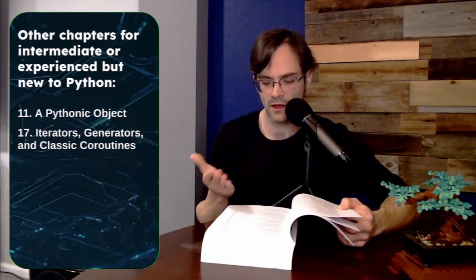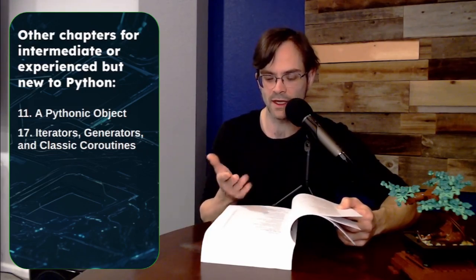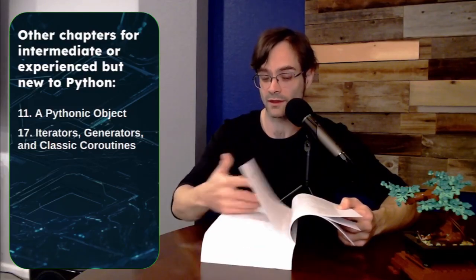And furthermore, I think everyone who's intermediate in Python or coming to Python from another language should read chapter 17 as well. This is iterators, generators, and classic coroutines. Hugely important, very useful. If you don't know how generators work in detail, that's a tool that you're not using. And you should learn about that tool because it's quite powerful.